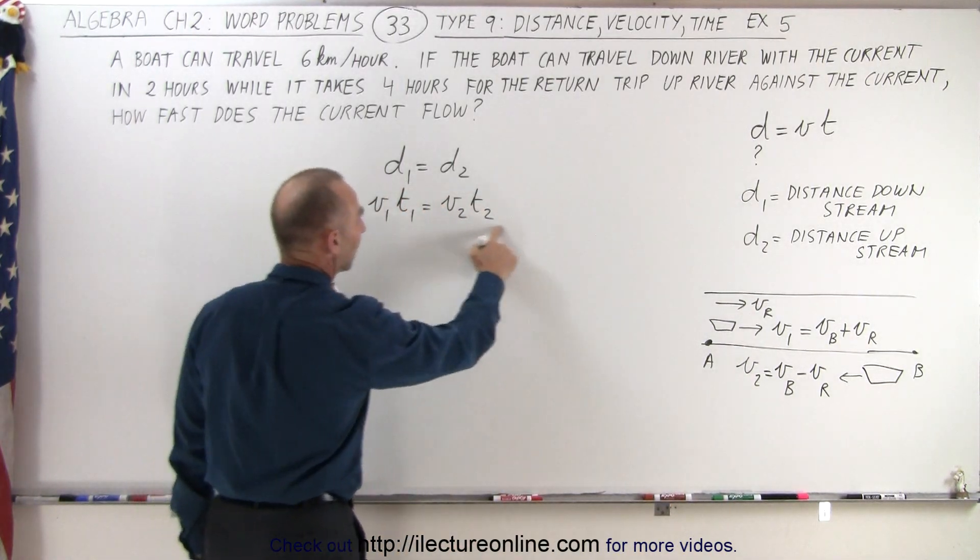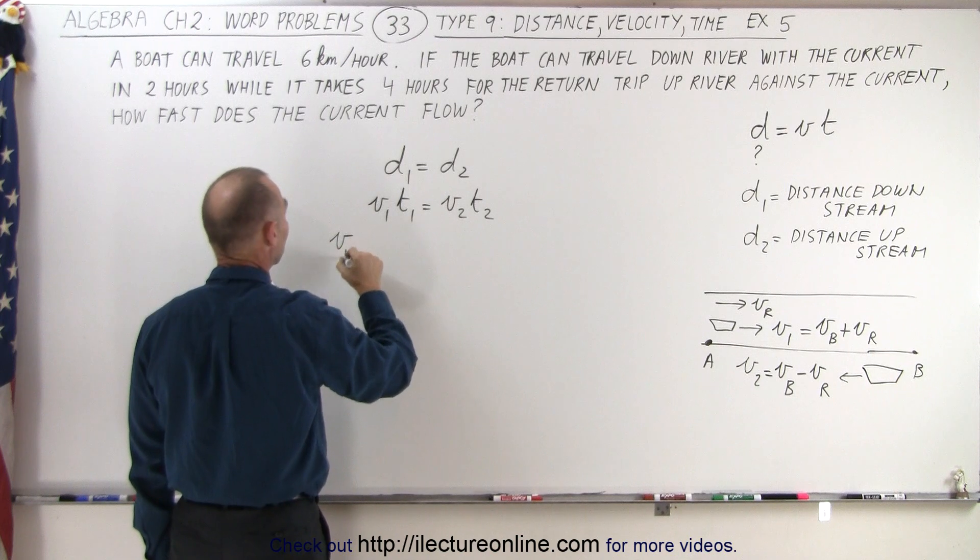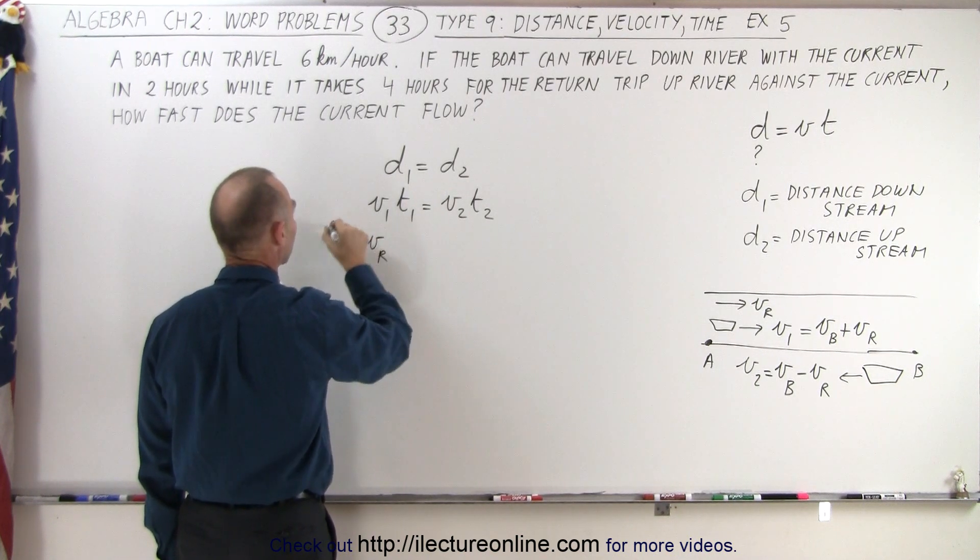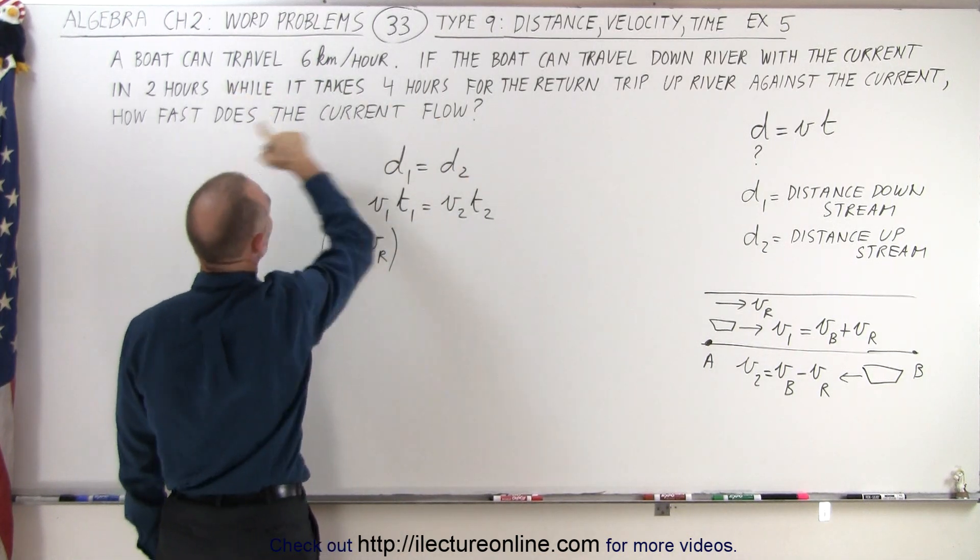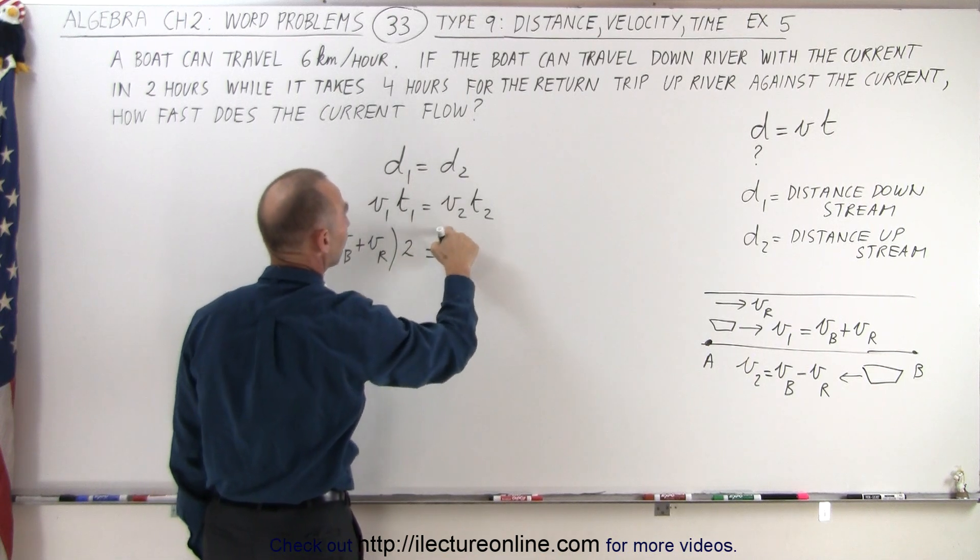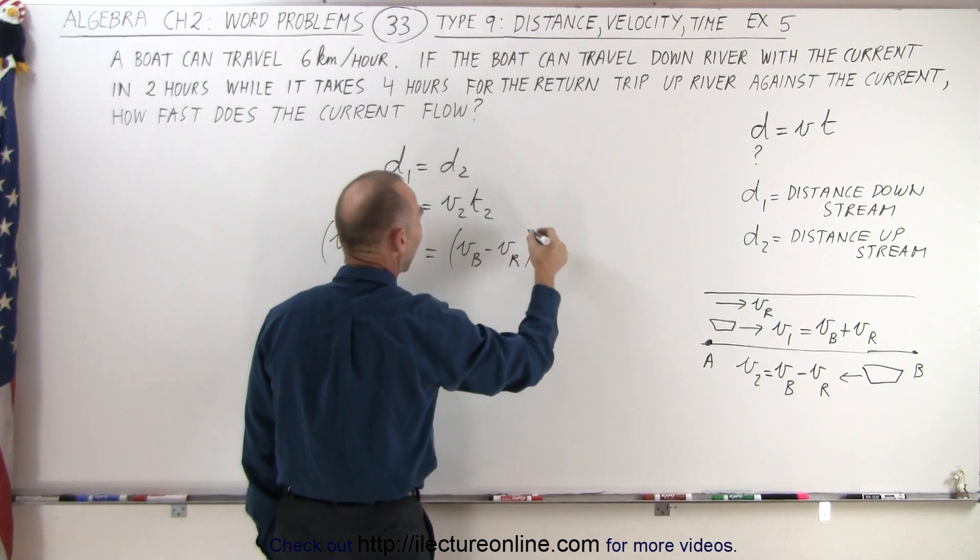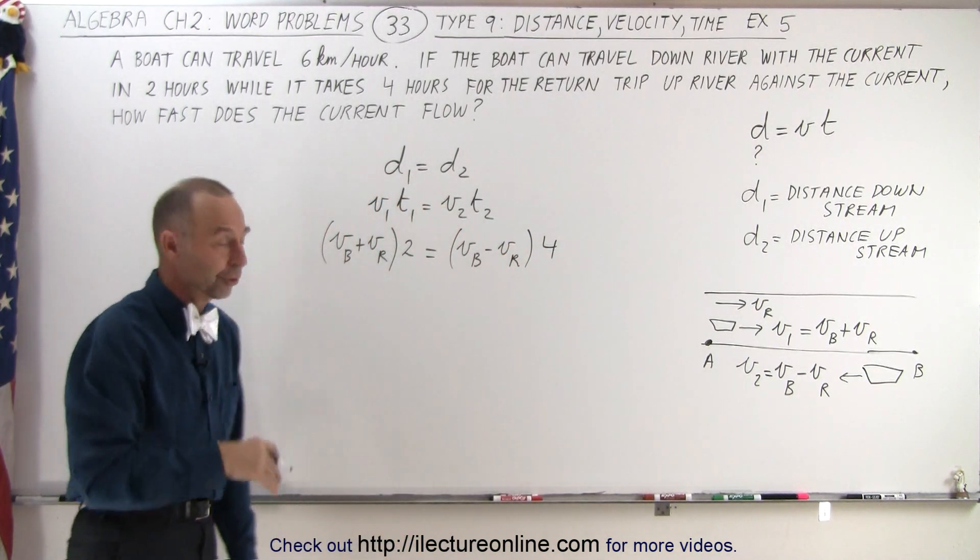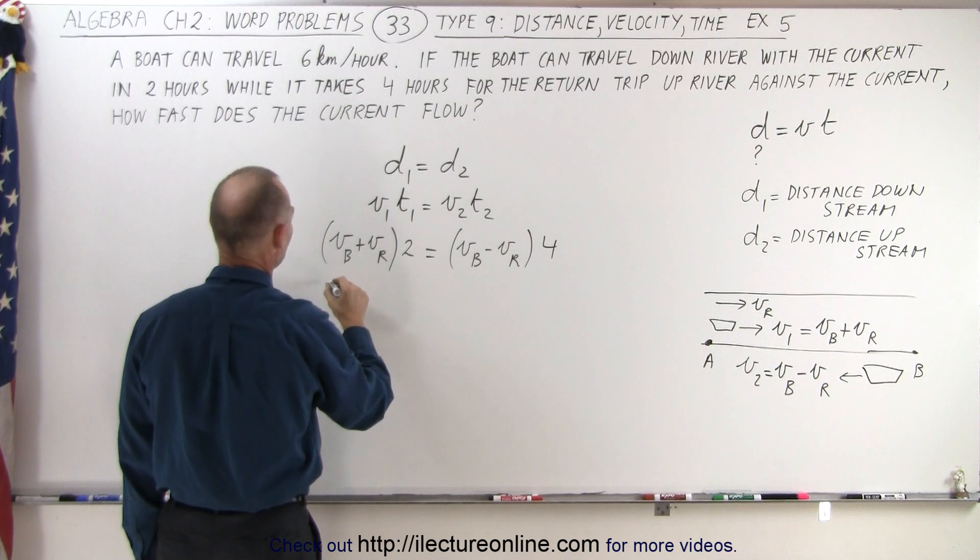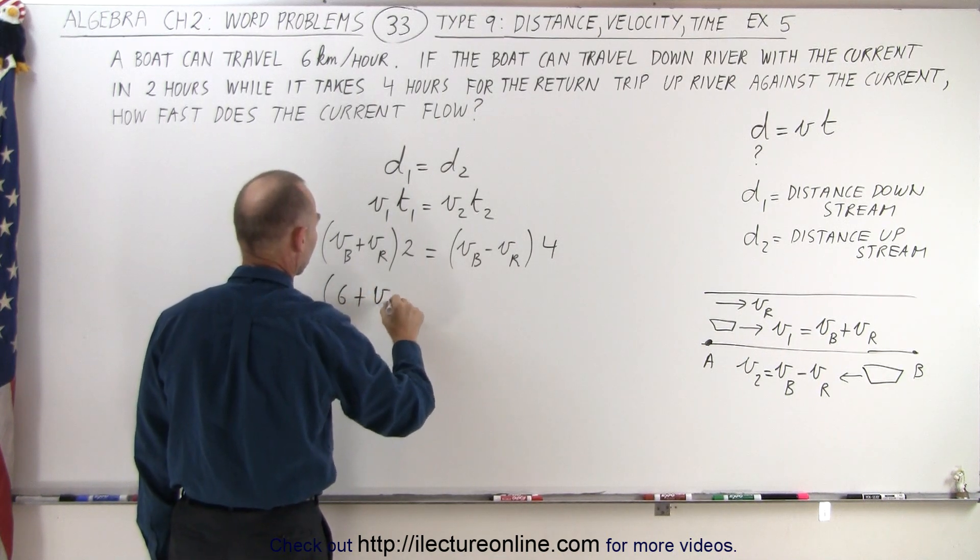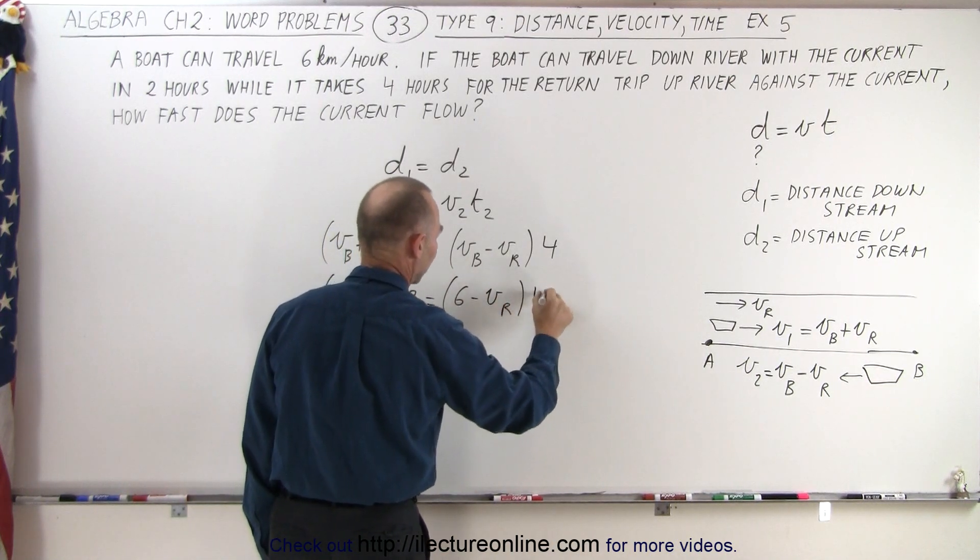So that means that our equation will now become as follows. V1, the velocity going down the river, is going to be velocity of the boat plus the velocity of the river times the time. Now time 1 is going to be 2 hours to go down the river. So that'll be times 2 equals velocity coming back, which is going to be velocity of the boat minus the velocity of the river times t2, which now takes 4 hours for the return trip. We were told what the velocity of the boat is. It's equal to 6. So this becomes 6 plus the velocity of the river times 2 equals 6 minus the velocity of the river times 4.